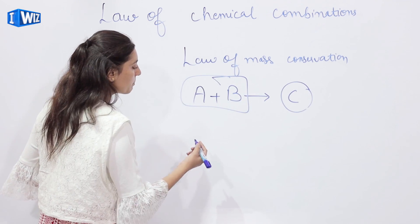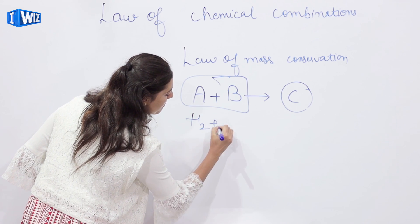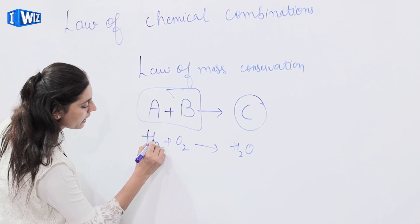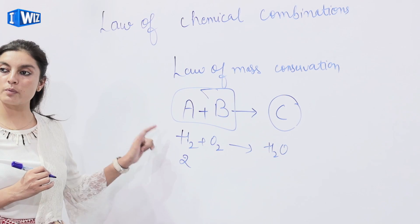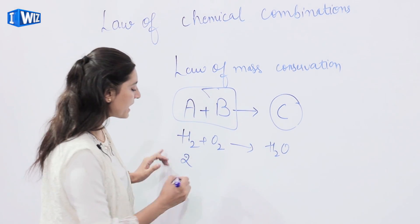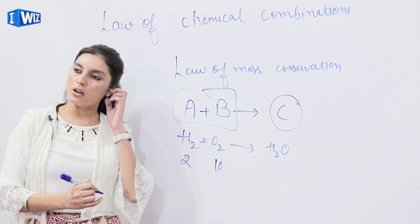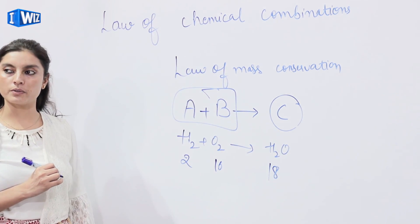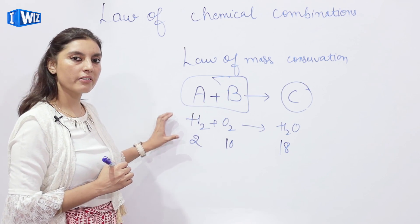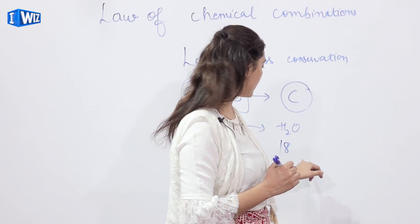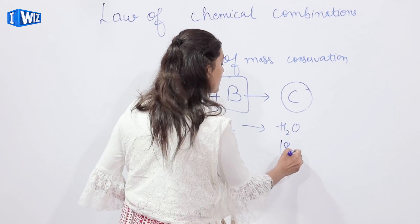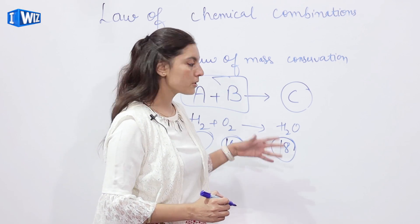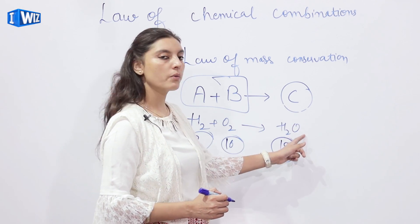A common example in chemistry: hydrogen combines with oxygen to give us water molecules. Two parts of hydrogen by weight combine with 16 parts of oxygen by weight to give us 18 parts of water. Here, 2 plus 16 equals 18, which is the molecular mass of water. So whenever two elements combine, the mass of the reactants is equivalent to the mass of the product.